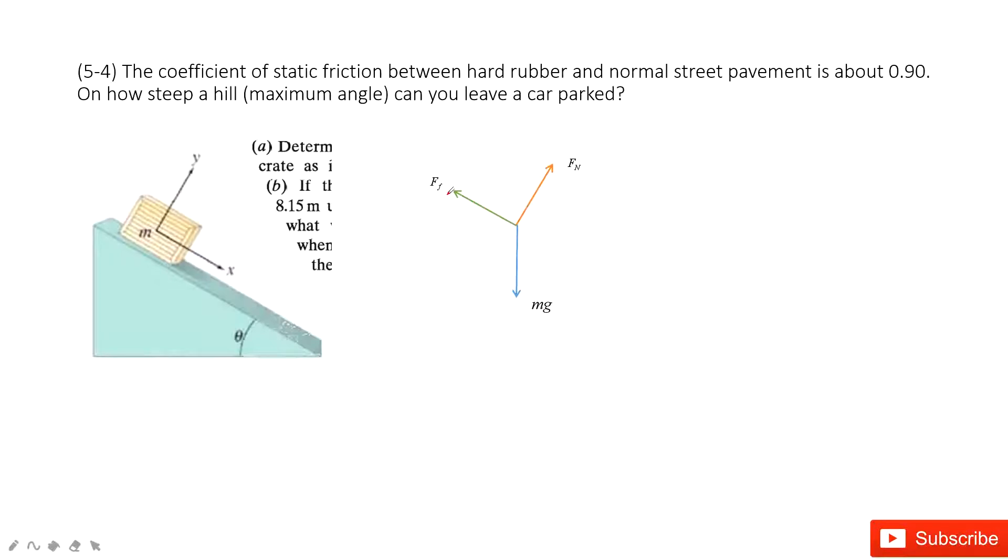So in this one, we have three forces, and we need to project the gravity in x-component and y-component. We consider along the slope is the x-component, vertical to the slope is y.